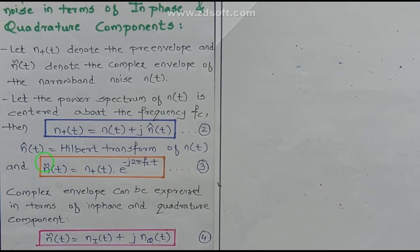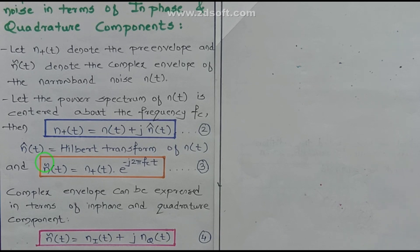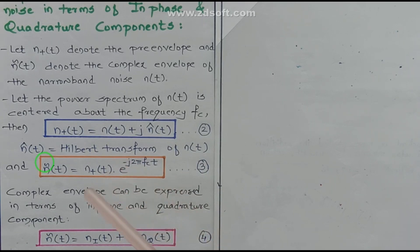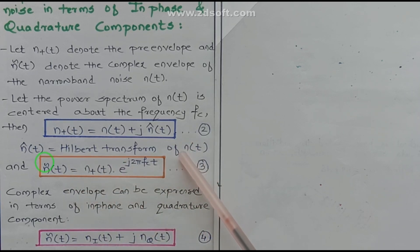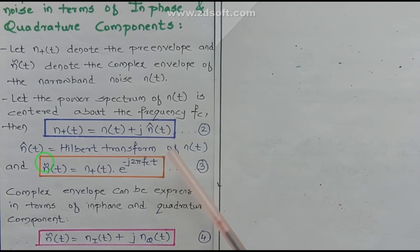As we know, the Fourier transform provides the mathematical basis for analyzing and designing frequency-selective filters for signal separation based on frequency content. There is another method of separating signals based on phase selectivity, which uses phase shift between signals. When the phase angles of all components of a signal are shifted by ±90 degrees, the resulting function of time is known as the Hilbert transform of the signal, and this is used especially for time-domain purposes.